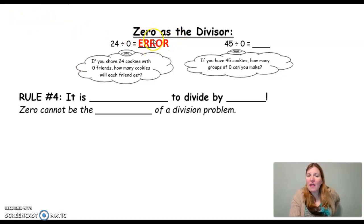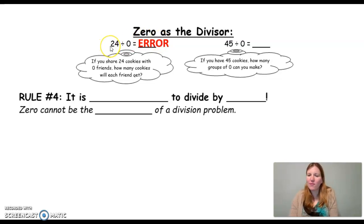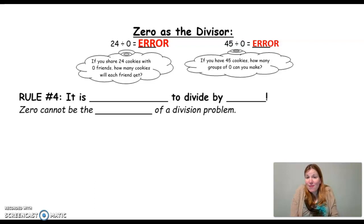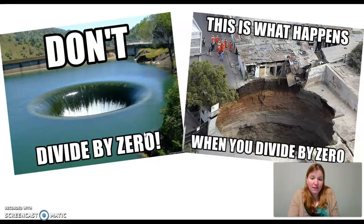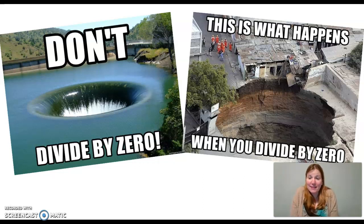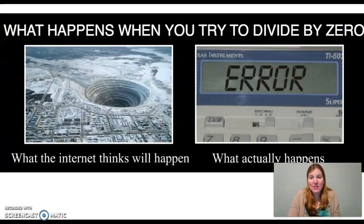Another way to think about this is to start with our quotient and try to multiply it by 0 to see if we could get 24. What number times 0 gives me 24? There isn't any number — that's why there's no answer. Likewise, if I have 45 divided by 0: how many groups of 0 can I make from 45 cookies? I can't make groups of 0. If I have 45, the smallest number of groups I can make is 1, because if I have something, I can only make groups of something — I can't have something and make groups of nothing. So rule number 4 is: it is impossible to divide by 0, or 0 cannot be the divisor of a division problem.